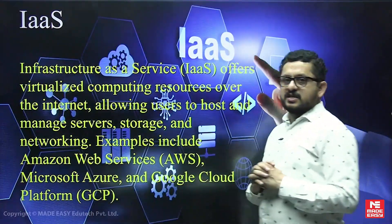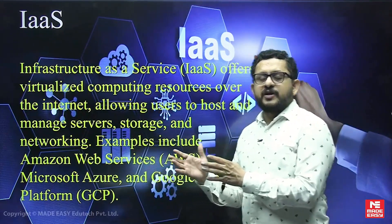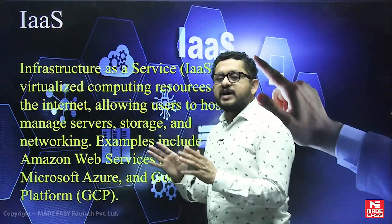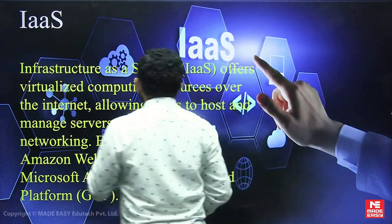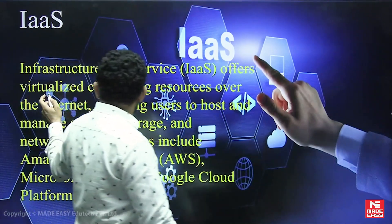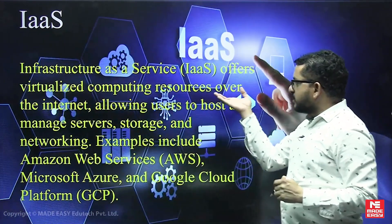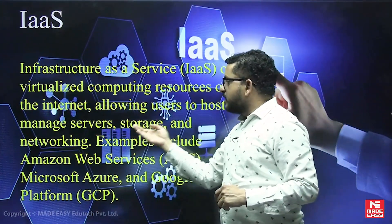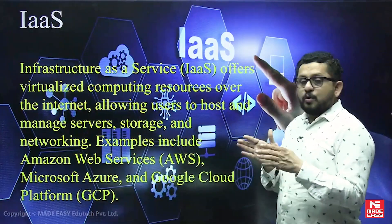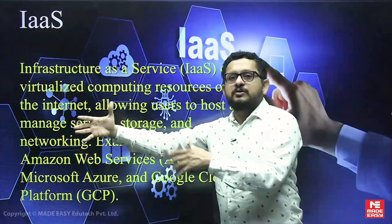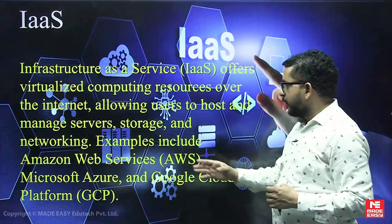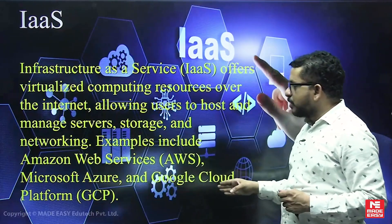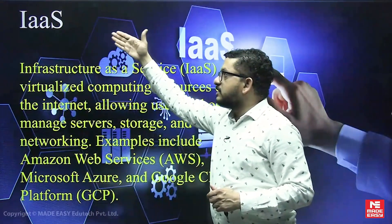The third service model is Infrastructure as a Service. Here, not direct software or platform but infrastructure is provided by the service providers. It offers virtualized computing resources over the internet, allowing users to host and manage services, storage, and networking. Examples include Amazon Web Services, Microsoft Azure, and Google Cloud Platform.